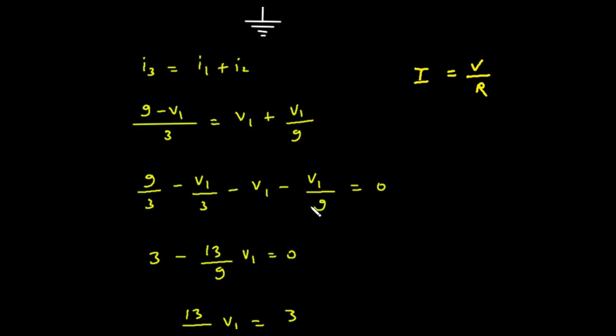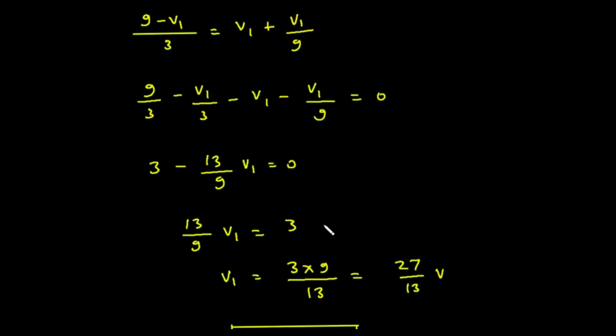Let's solve this equation for V1. To get rid of the fractions, we can multiply the entire equation by the common denominator, which is 9. Multiplying the first term, V1 divided by 9, by 9 gives us just V1. Multiplying the second term, V1 divided by 1, by 9 gives us 9 times V1. Multiplying the third term, V1 minus 9 divided by 3, by 9 gives us 3 times V1 minus 9, which expands to 3 times V1 minus 27.